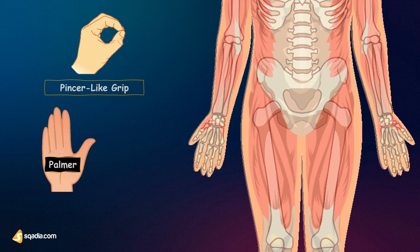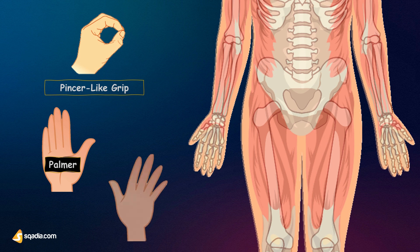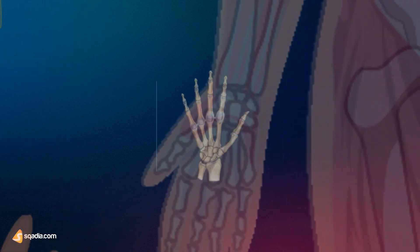The anterior side of the hand is its palmar or volar surface. The posterior aspect is the dorsal surface. In identifying the individual digits, the thumb (Pollux) is digit 1, with the other numbers following sequentially from lateral to medial.